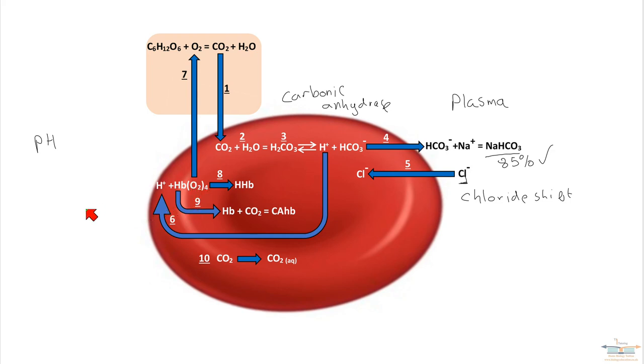The next part of this diagram is to do with CO2 transport again. So point number nine, hemoglobin can react with carbon dioxide. In fact, carbon dioxide reacts with certain amino acids within the hemoglobin protein, and what it produces is something called carbaminohemoglobin CAHB, and that's another way in which carbon dioxide is transported. And that represents about 10% of the total CO2 being transported.